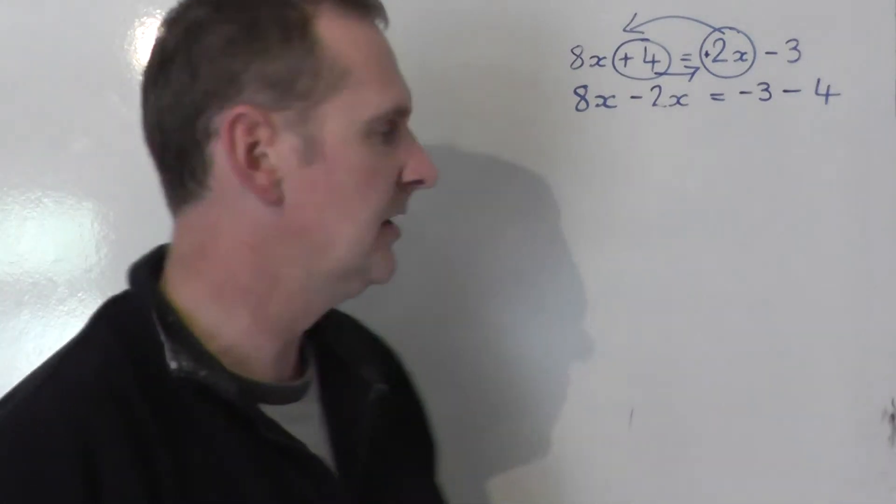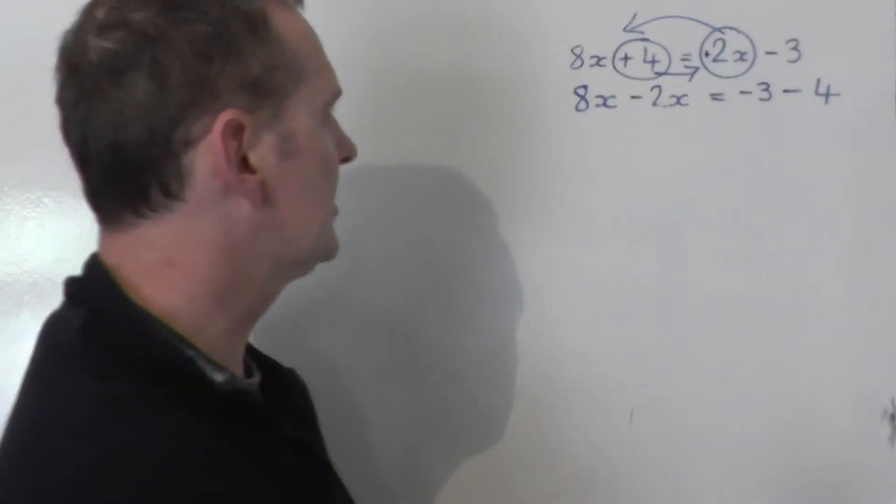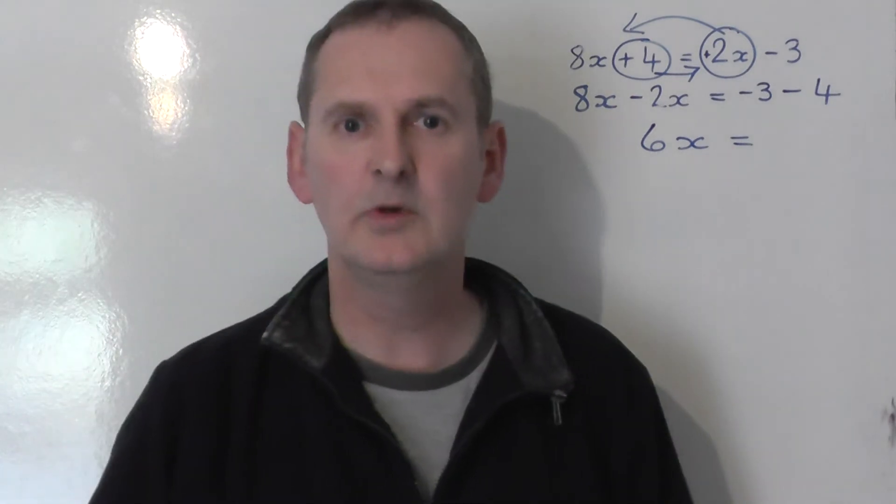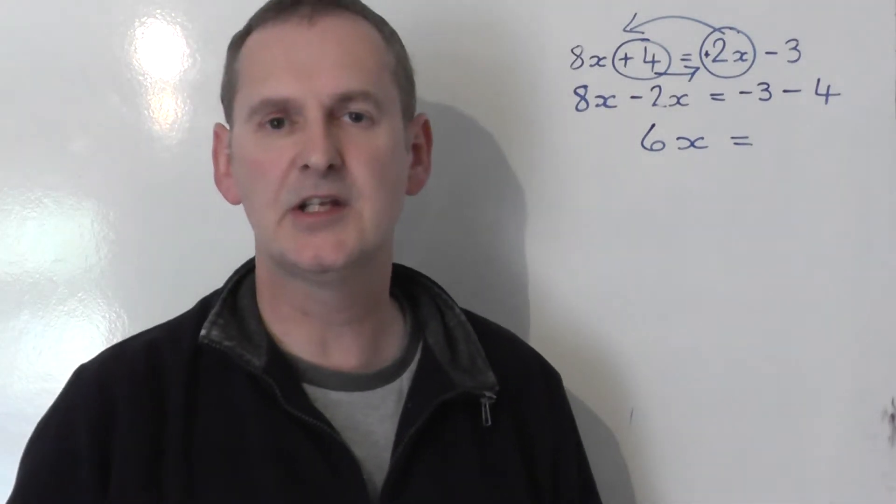OK, now we just tidy up. On the left-hand side I've got 8x's, take away 2x's, that's 6x's. And on the right-hand side, we've got a negative 3 minus 4.